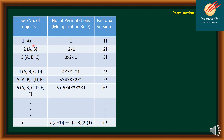For one object, that is letter A, we have only one permutation, and the factorial version is 1 factorial. If we have two objects, namely A and B, we have two choices for the first letter, but only one arrangement for the second letter. So we have 2 times 1, which is 2 factorial.